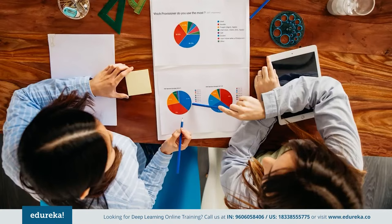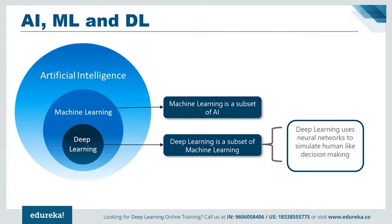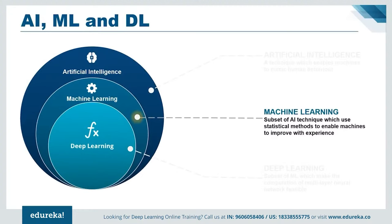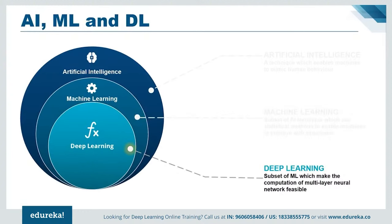Before talking about deep learning, one must understand its relationship with machine learning and artificial intelligence in terms of data science. Data science is the superset, inside which we have artificial intelligence, inside that we have machine learning, and inside that we have deep learning. Data science is the extraction of knowledge from data using different techniques and algorithms, whereas AI is a technique which enables machines to mimic human behavior. Machine learning is a subset of AI that uses statistical methods to enable machines to improve with experience, whereas deep learning is a subset of machine learning that makes multi-layer neural networks feasible and uses neural networks to simulate human-like decision making.